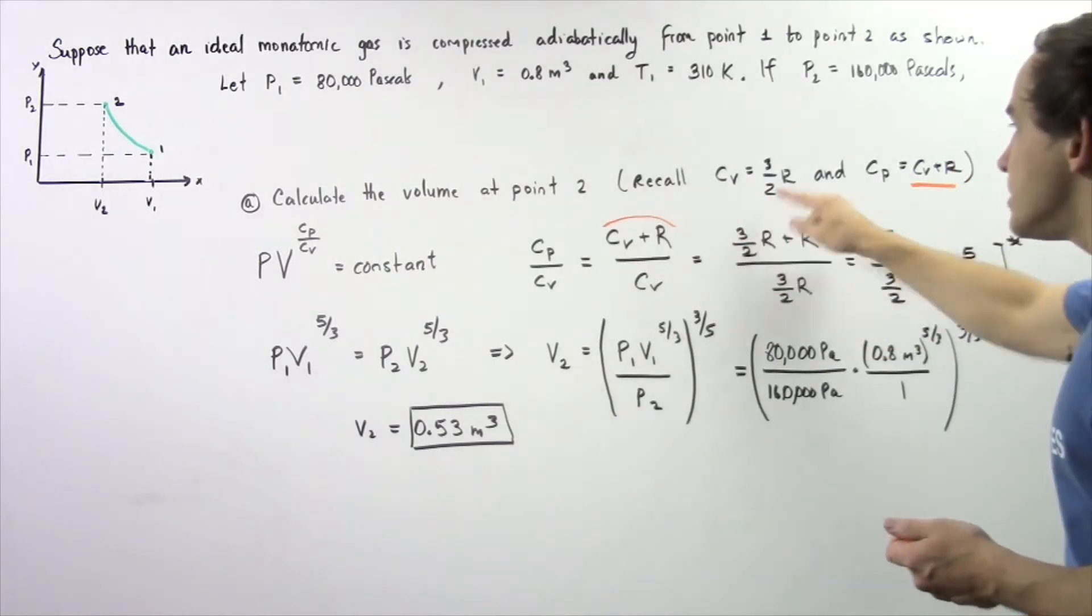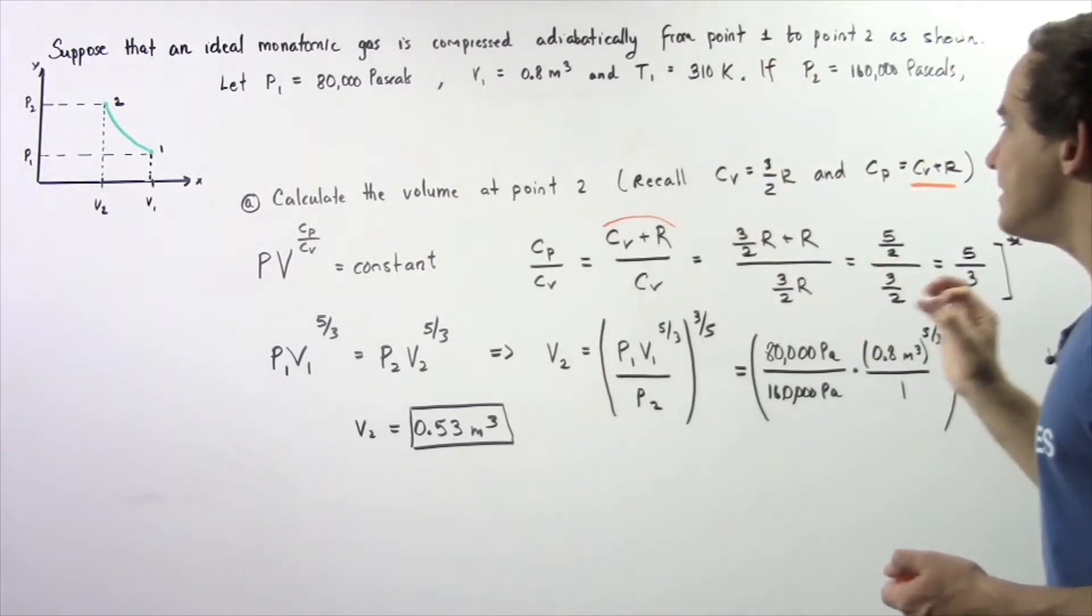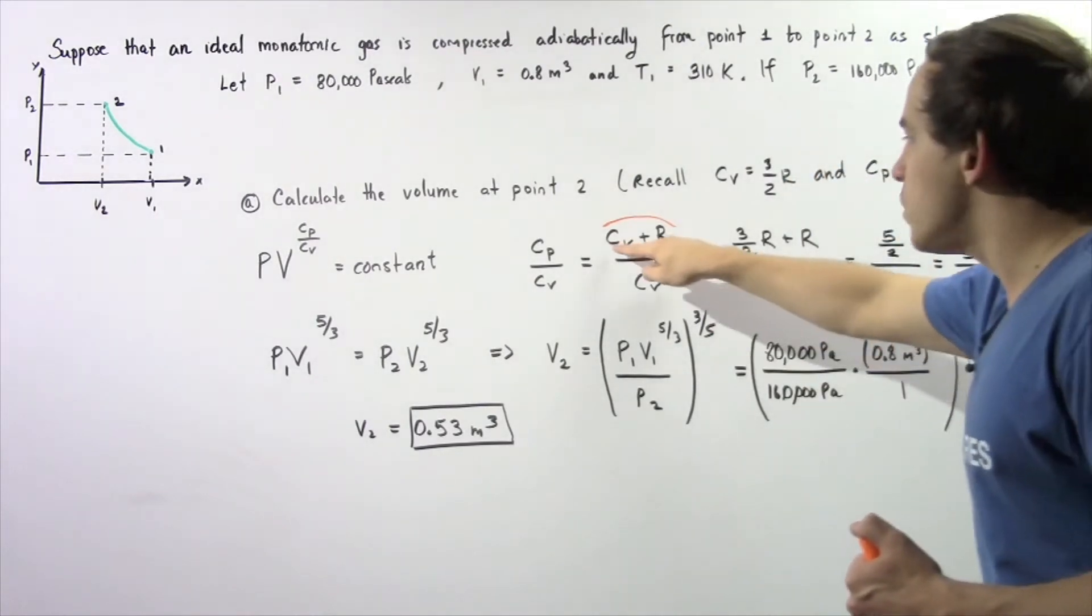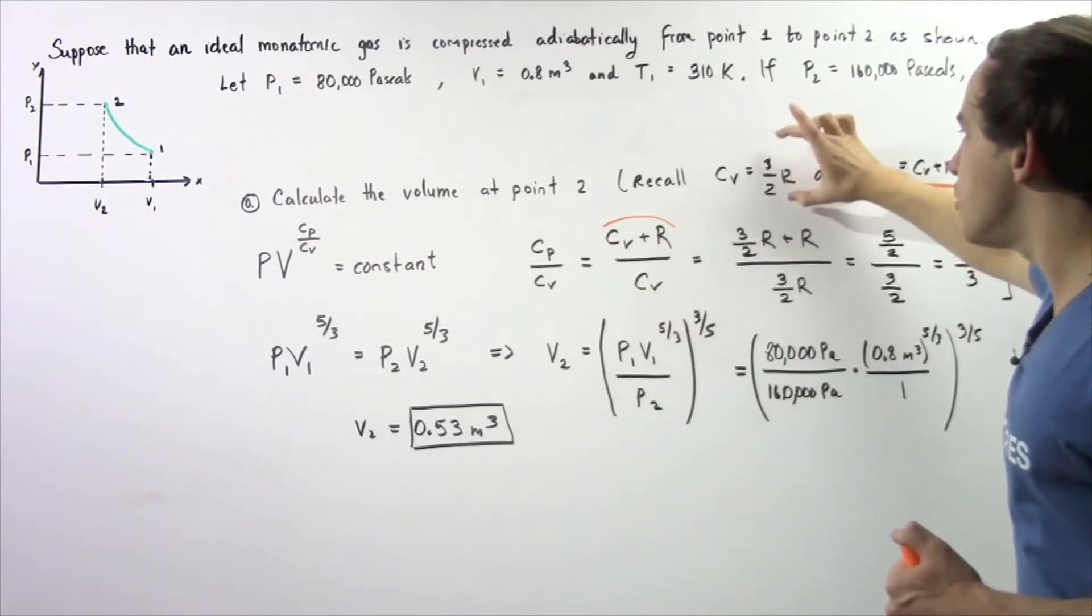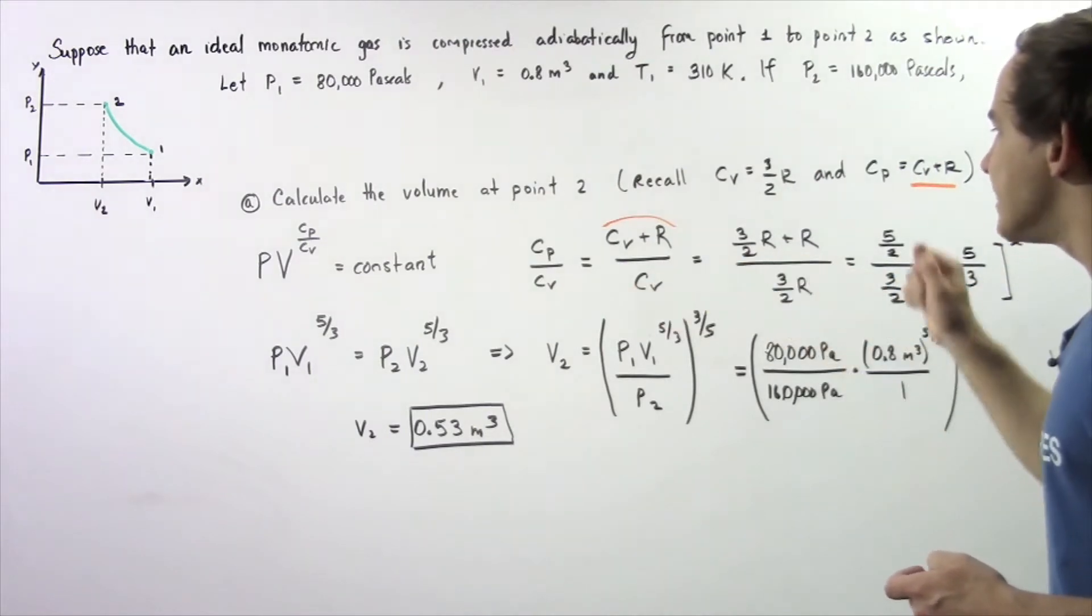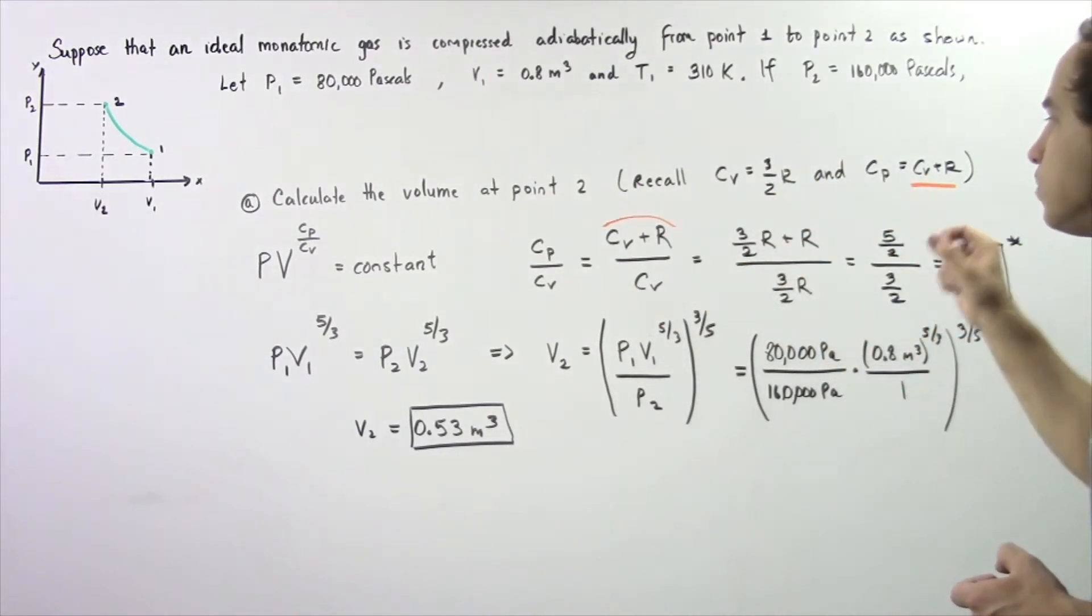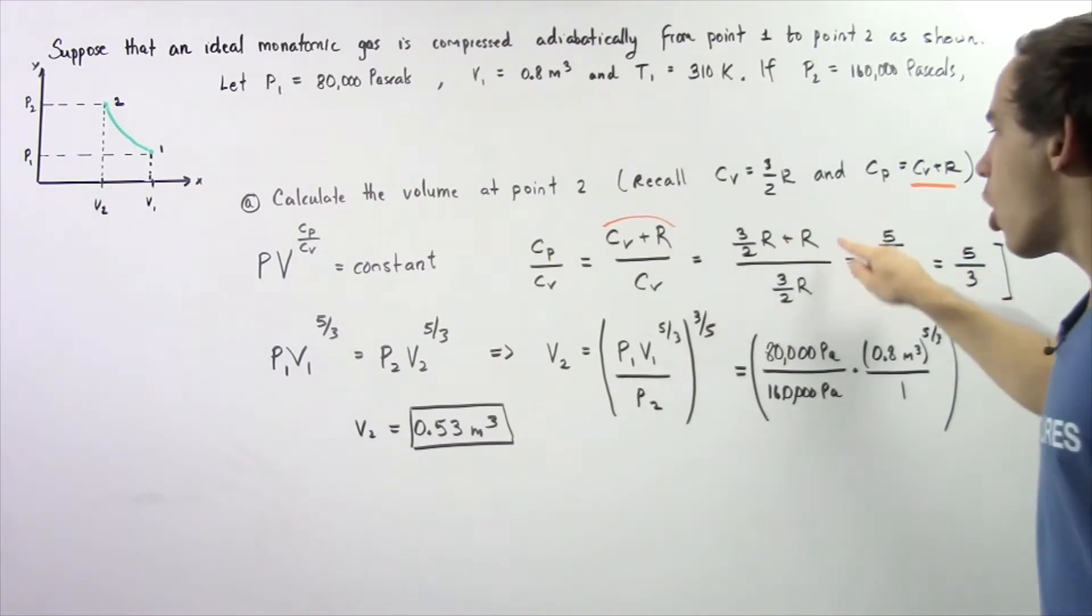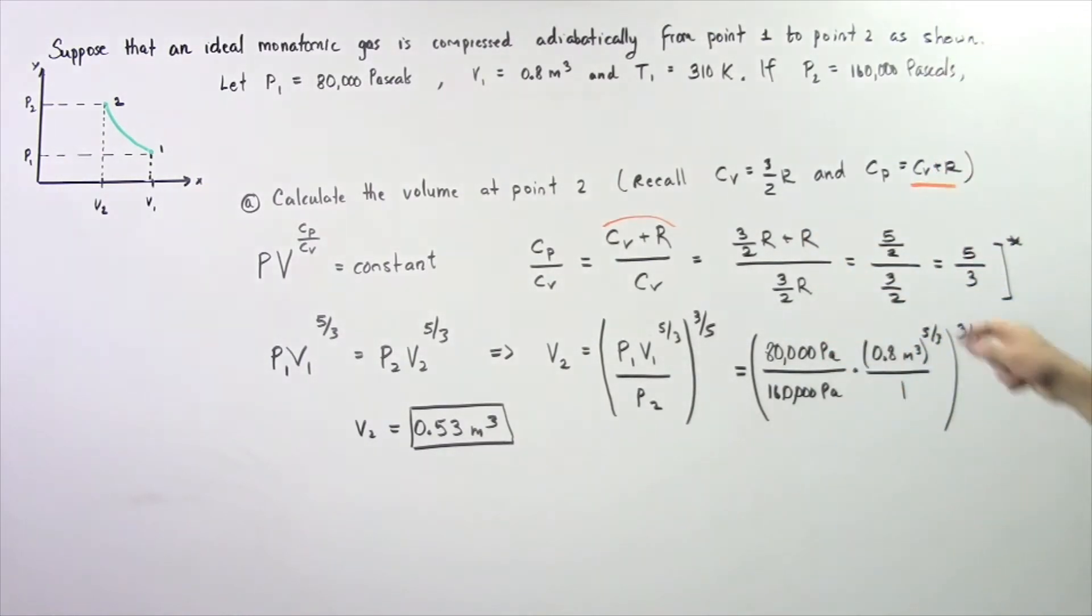From this result, we know that CV equals 3/2 multiplied by R, so we replace CV with this quantity. We get (3/2)R + R divided by (3/2)R, which gives us the following fraction. These R cancel, and we're left with 5/2 divided by 3/2.